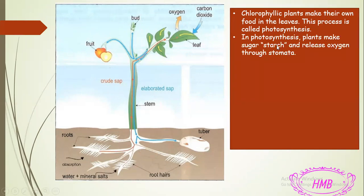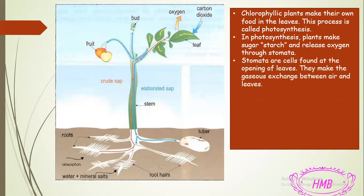This process is called photosynthesis. In photosynthesis, plants make sugar called starch and release oxygen through the stomata. What are stomata? They are cells found at the openings of the leaves — just like a sieve, they have small openings or pores. Through these pores, gases are taken in and released. The gas taken in is carbon dioxide and the gas released is oxygen. The release and intake of gas happens through these cells.